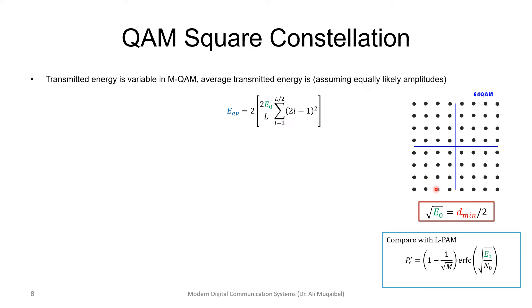If you tell me what is your minimum distance, I can relate that to E naught. From there, I can find E average, which is average energy per symbol for the case of M-QAM.